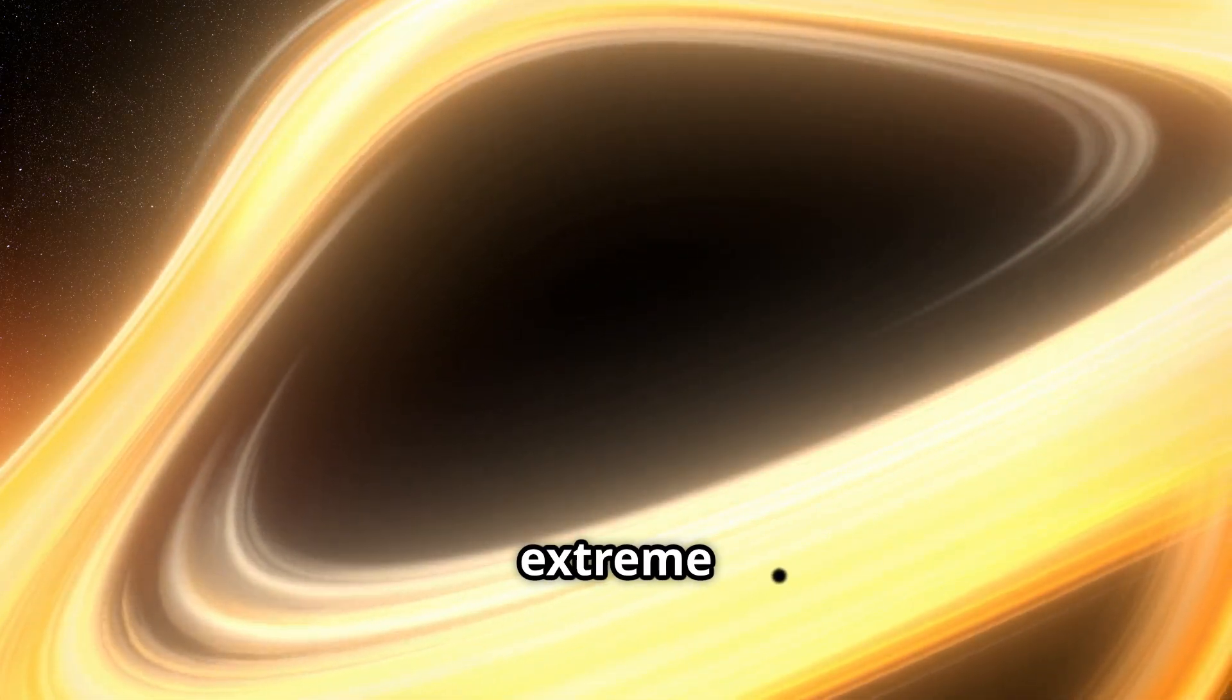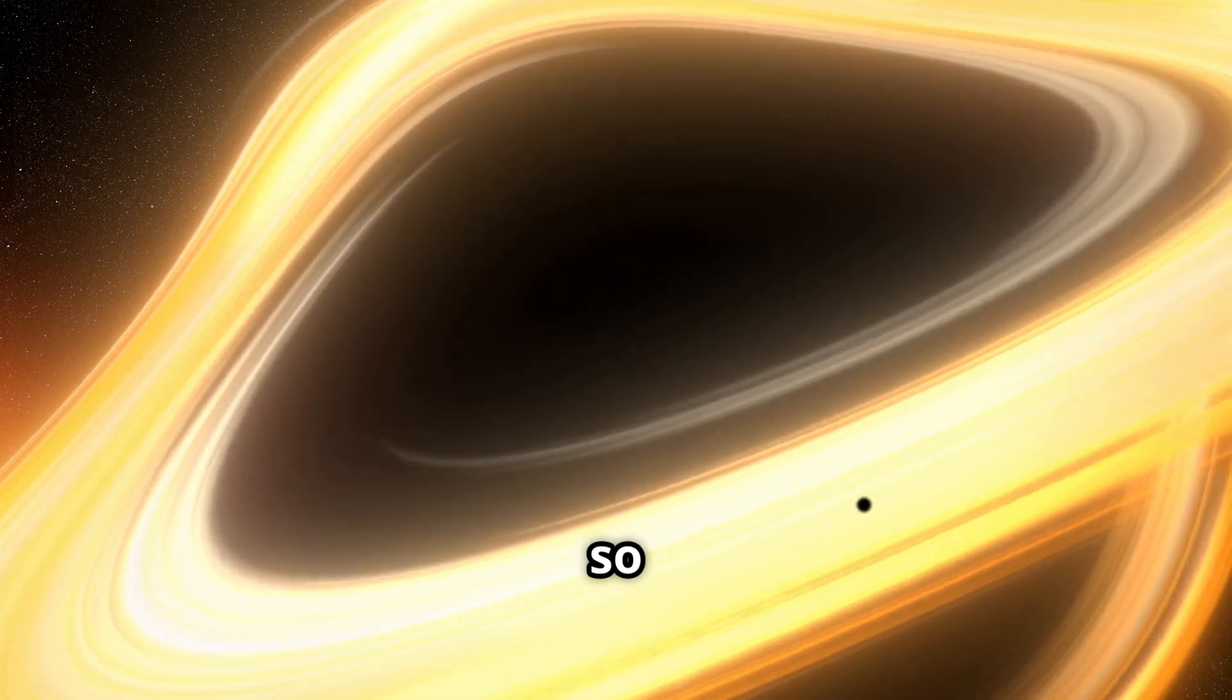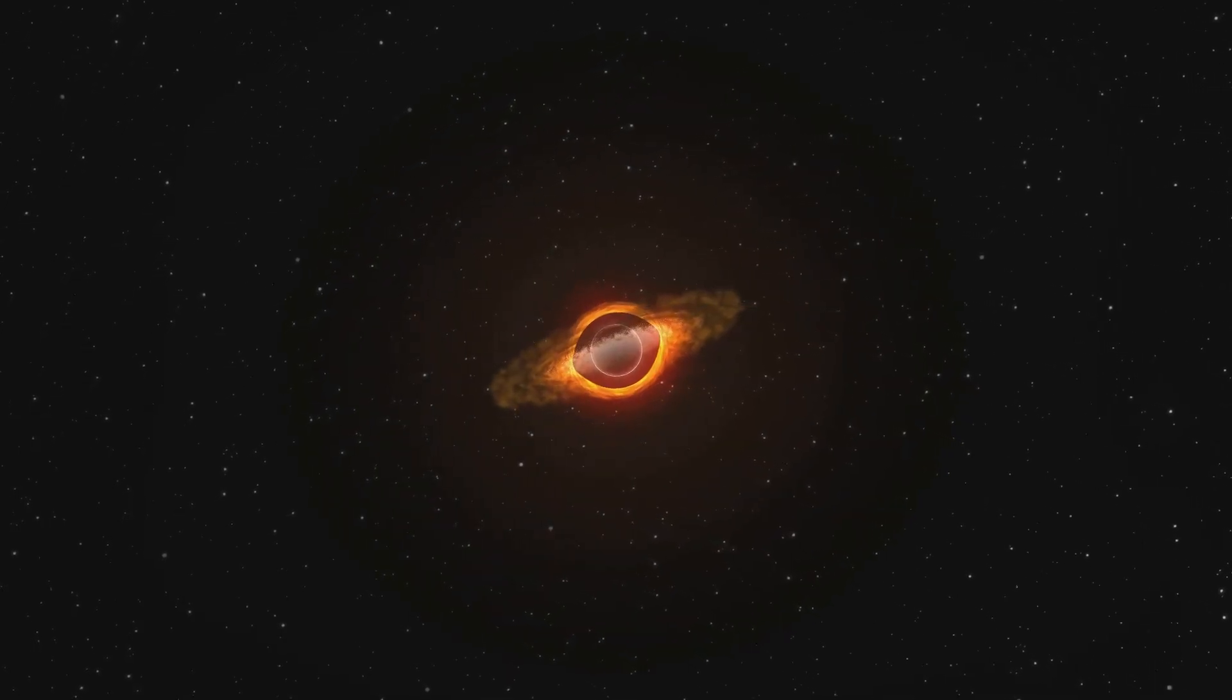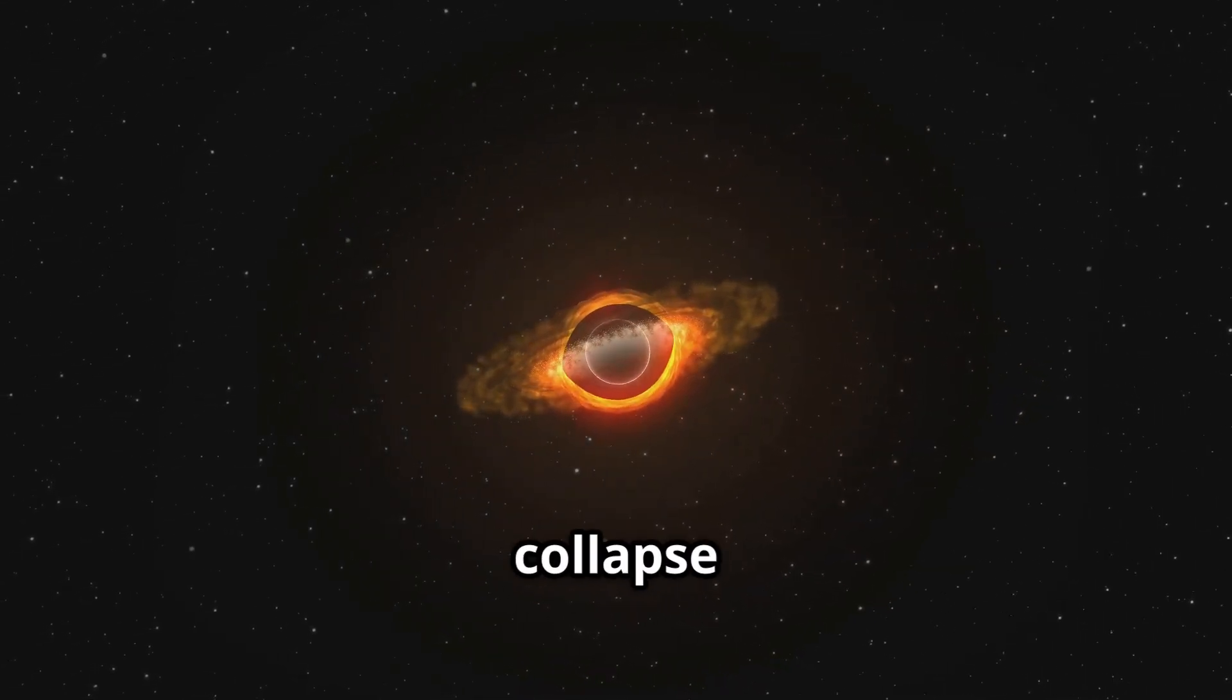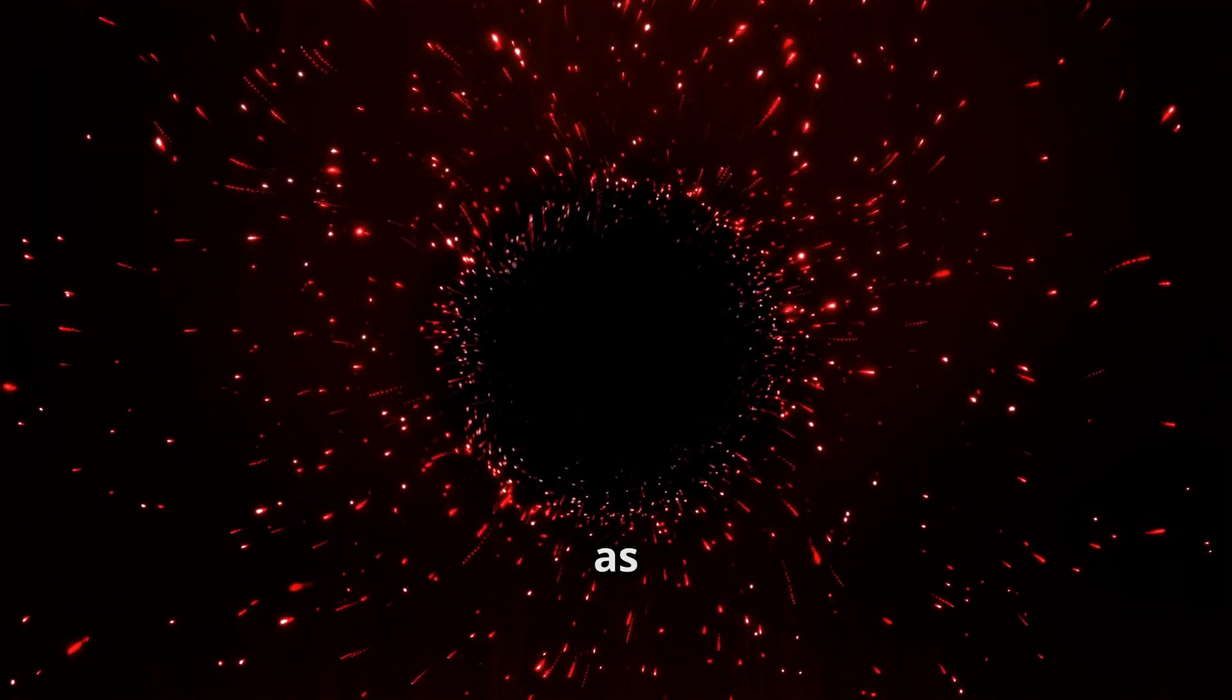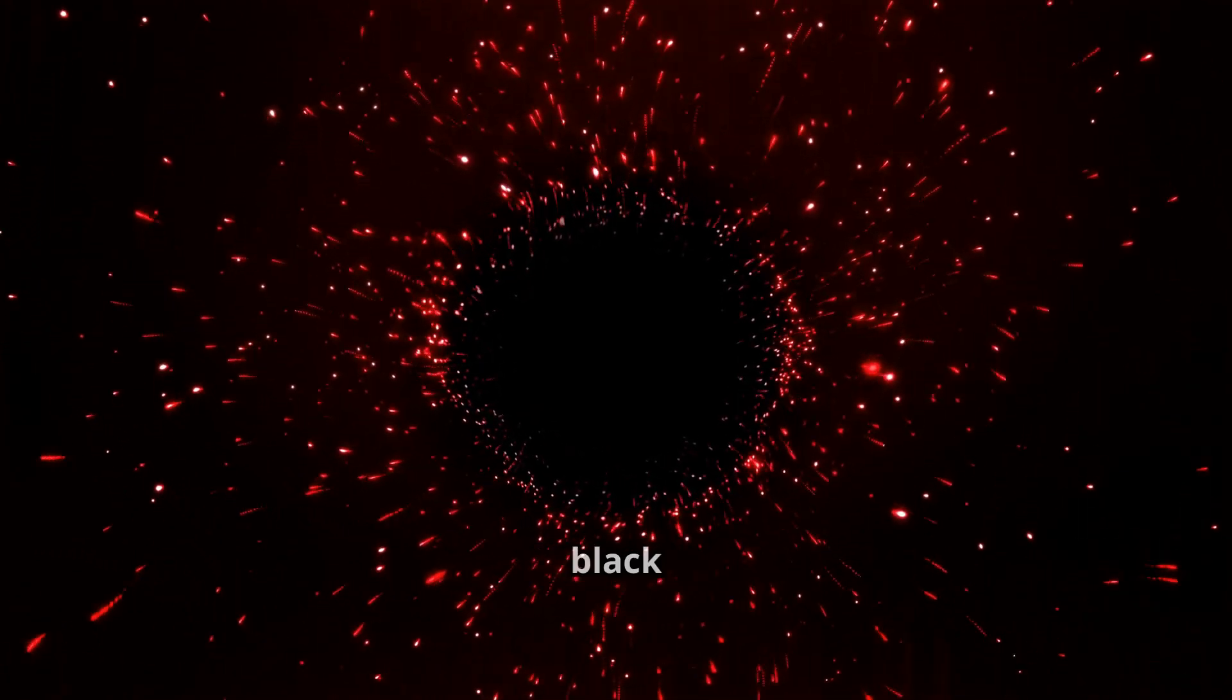At the heart of the most extreme singularities lies an unfathomable density, where gravity is so strong that not even light can escape. These extreme objects are formed when massive stars collapse under their own gravity, creating an intense gravitational pull. The laws of physics as we know them start to break down at the event horizon, the point of no return around a black hole.